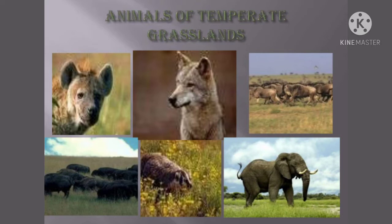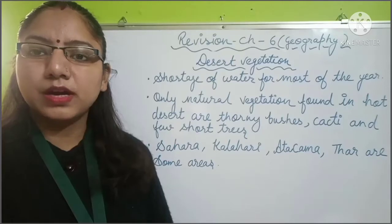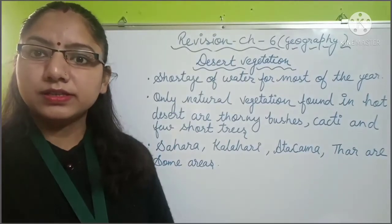In temperate grassland areas, swift-moving animals like antelope, horses, wild dogs, wolves, jaguars, squirrels, rabbits, giraffes, wild asses, and leopards are found. Kites, eagles, and owls are also found in these areas. Now let's see what desert vegetation is.